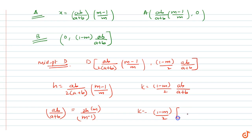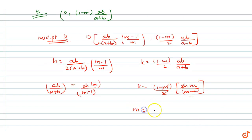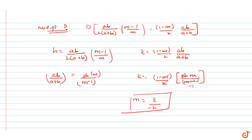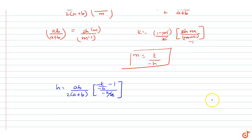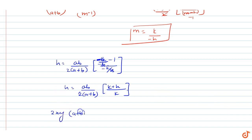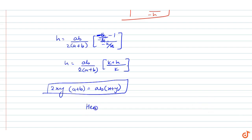Substituting m = −k/h back into the expression for h: h = ab/(2(a+b)) · (−k/h − 1)/(−k/h) = ab/(2(a+b)) · (k+h)/k. This gives 2hk/(a+b) = ab(h+k)/... Replacing h and k with x and y, we obtain 2xy(a+b) = ab(x+y). Hence proved.